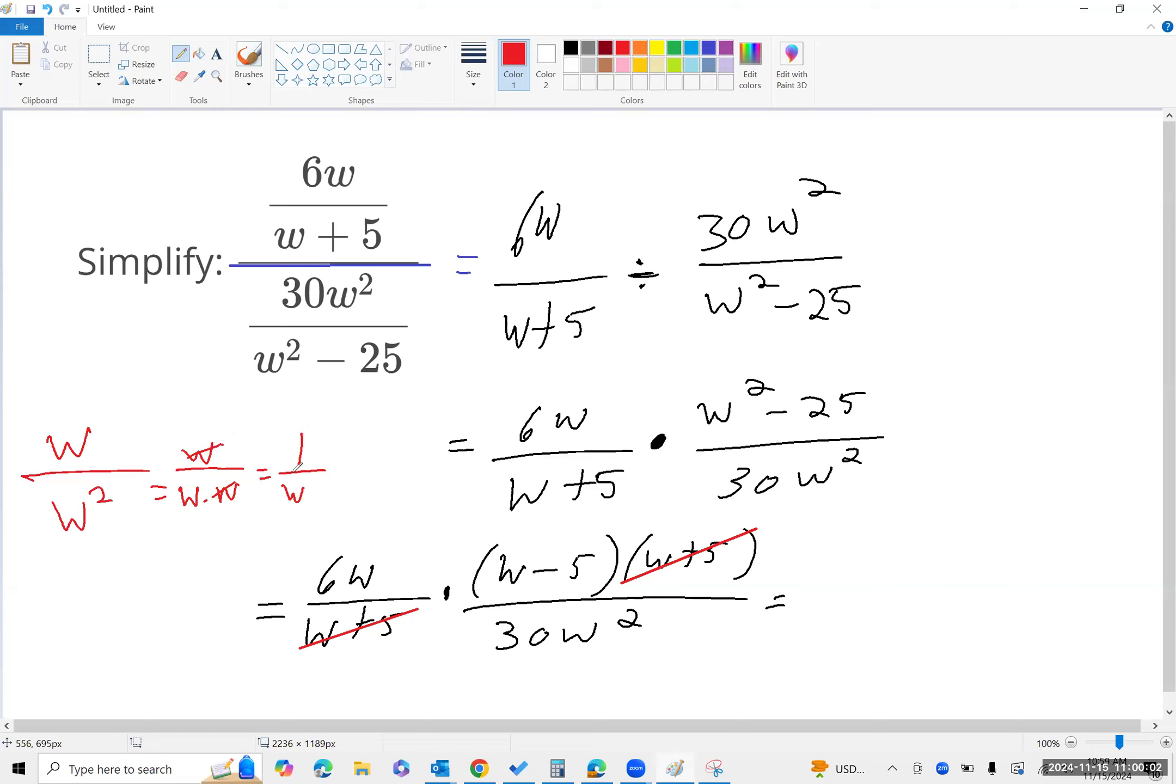So if we're focusing in on this piece, on those w's there, it's just one over w. And then the other thing to really take notice of is this 6 and this 30.